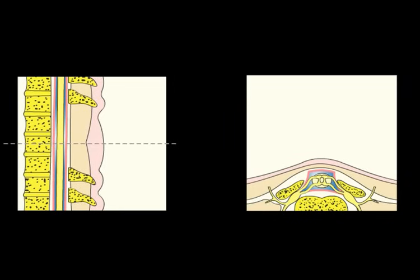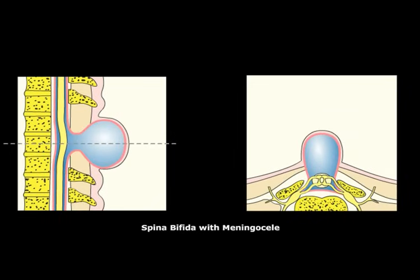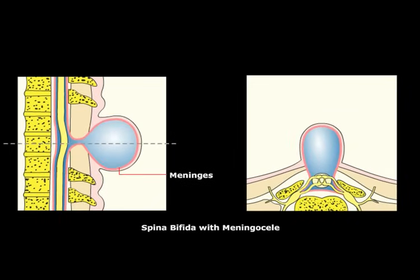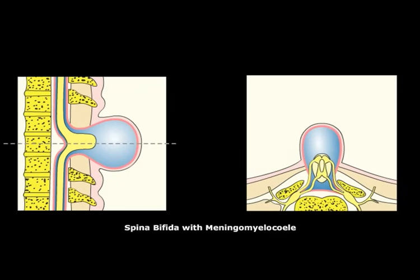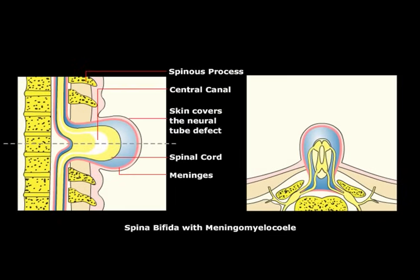In spina bifida with meningeal seal, the meninges protrude through the vertebral defect without protrusion of the spinal cord. In spina bifida with meningeal myelocele, both the meninges and the spinal cord protrude through the vertebral defect. Notice that the skin covers the neural tube defect. It is usually associated with Chiari 2 malformation and hydrocephalus. Alpha-fetoprotein levels will be increased.